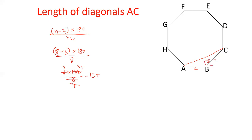If I extend this side, the exterior angle will be 45 degrees. Similarly, if I extend line BC, that angle is also 45 degrees, and therefore the angle at that point will be 90 degrees. So basically, this forms a right angle triangle, and the length of side BC is 2. Since it is a right angle isosceles triangle with both angles equal to 45 degrees, both the legs are equal, each being X.